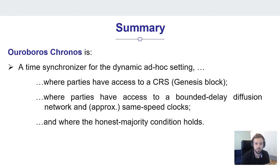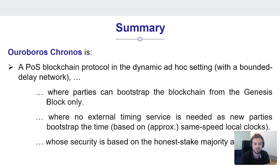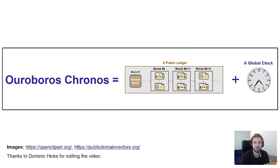As a summary, Ouroboros KRONOS is a time synchronizer for the dynamic ad hoc setting, where we have access to a CRS and the Genesis block, and where parties have access to a bounded delay diffusion network and approximately same speed clocks. The protocol is secure under the honest majority condition. At the same time, KRONOS is a PoS blockchain protocol in the dynamic ad hoc setting: parties can bootstrap the blockchain based on the Genesis block only, with no dependency on an external timing service. Parties bootstrap the time based on approximately same speed clocks, with security based on the honest stake majority condition. With that, I conclude this talk. Thanks everyone for watching.